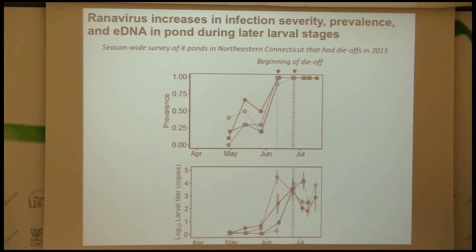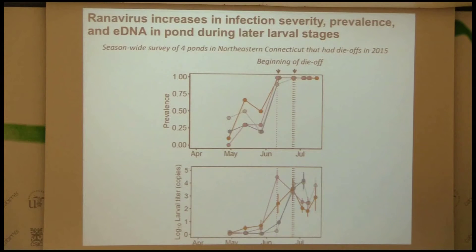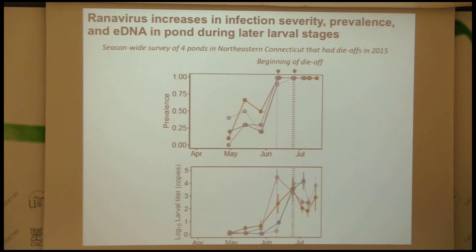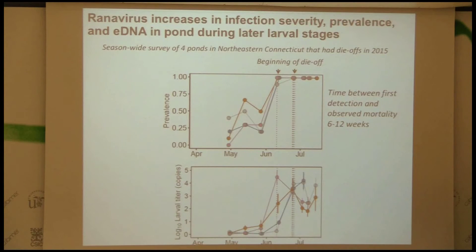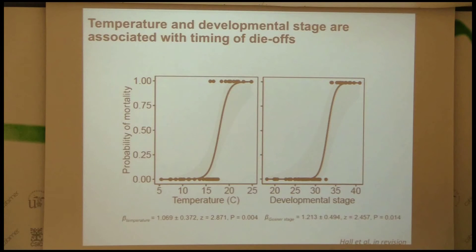The log of titers in the larvae matches the eDNA — what's in the larvae seems to be what we're measuring in the water. That's useful for conservation: we can measure amounts in the water with strong conviction that larvae are experiencing them. The time between first detection and observed mortality is 6 to 12 weeks, during which we see this exponential increase. Temperatures in these ponds shift — the probability of mortality is higher above 15-20 degrees Celsius. Development stage is also shifting — this is right when larvae develop hind legs and become more sensitive to environmental conditions, a period when stressors can induce accelerated metamorphosis.